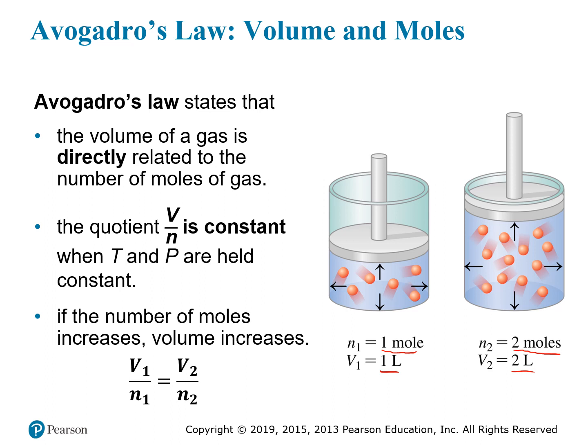We can express that through the general expression: V1 divided by N1 equals V2 divided by N2, where V1 and N1 on the left-hand side are the relationship before some change, and V2 and N2 on the right-hand side are the relationship after some change.